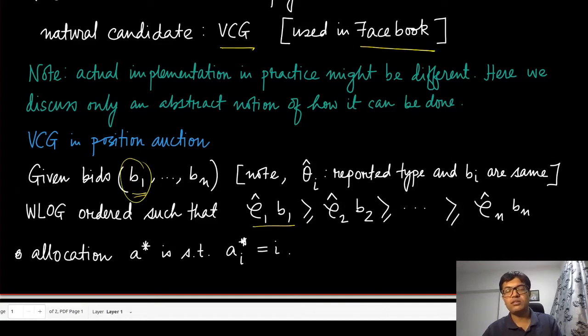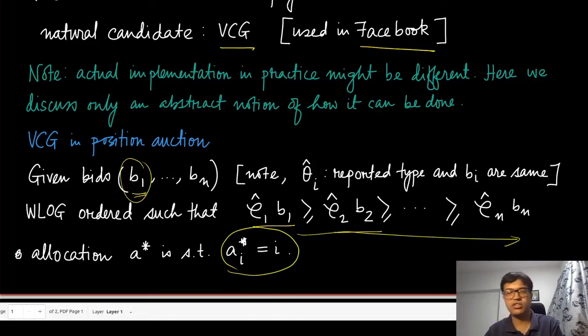ρ_1 hat times b_1 is going to be the first position, the topmost position. The second agent has the second highest value of ρ_2 hat times b_2 and so on. The efficient allocation allocates these agents in this order.